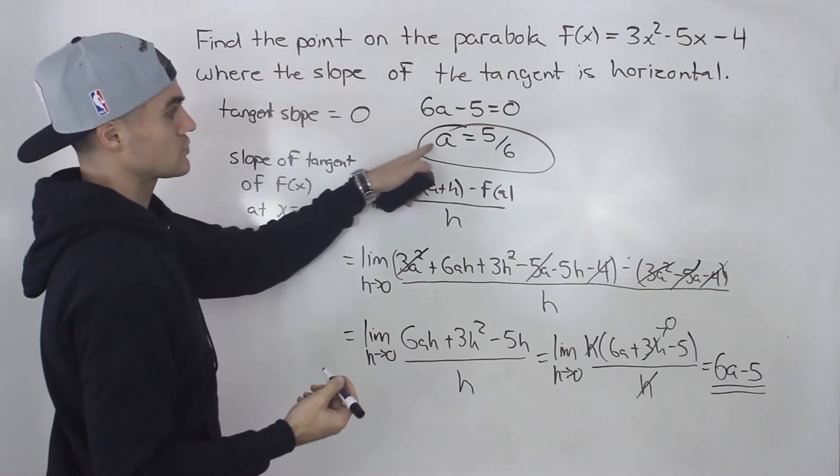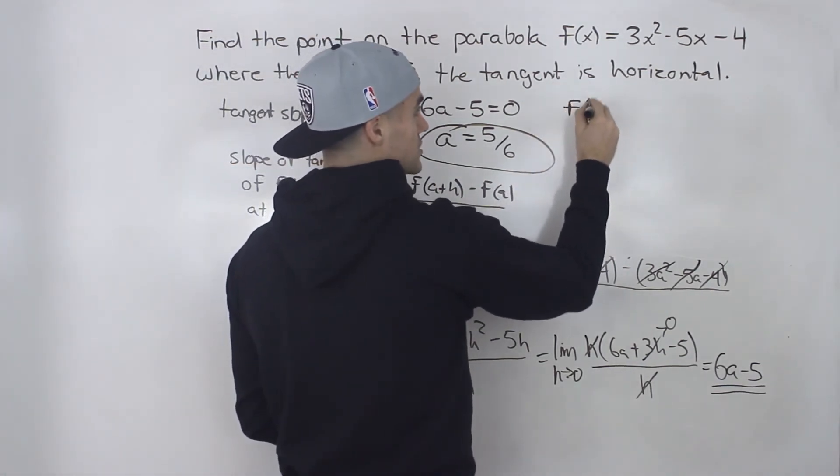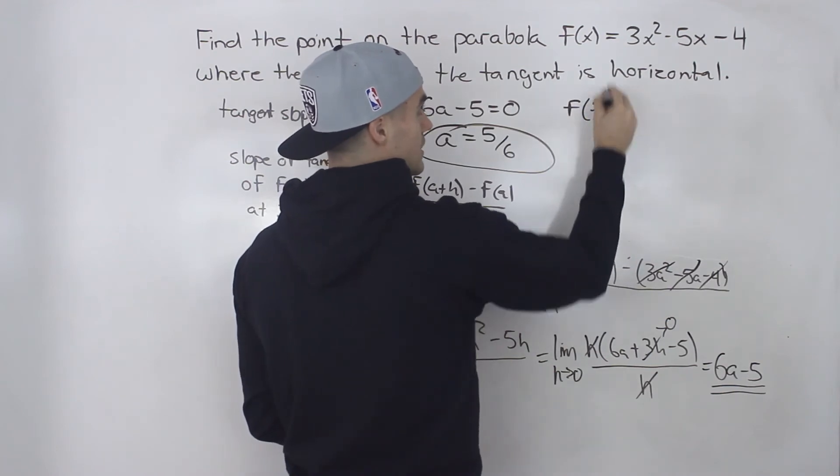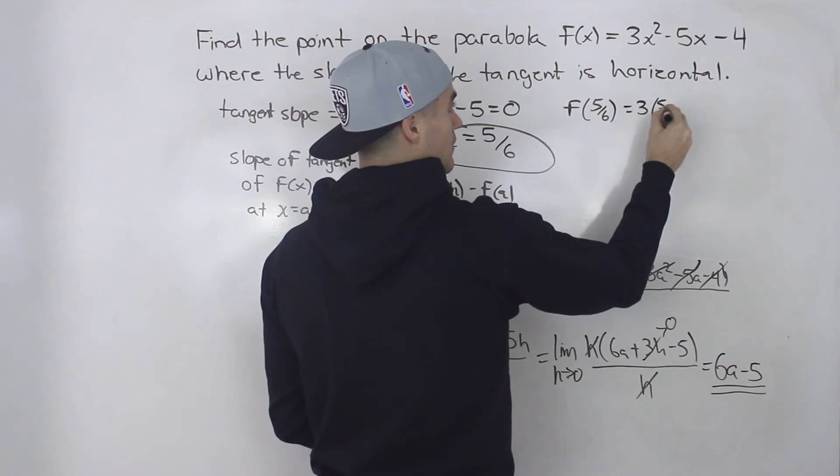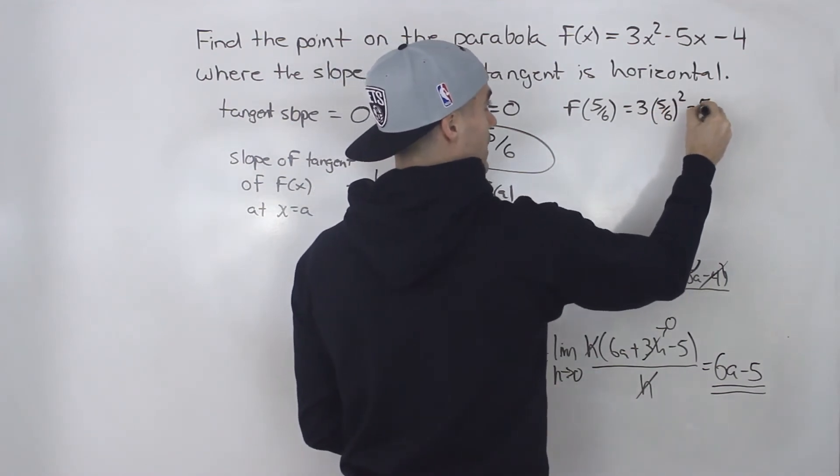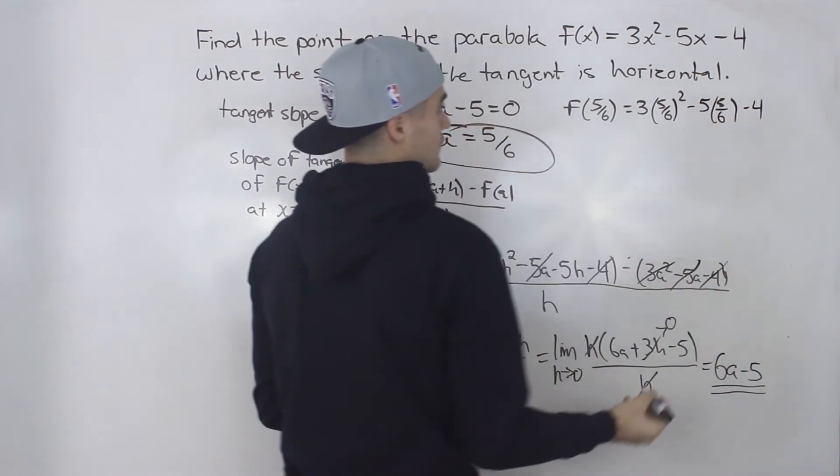So at an x value of 5/6 on this function, the slope of the tangent is going to be horizontal. However, they want the point. They don't just want the x value. So you'd have to find the y value by just plugging 5/6 into the function.